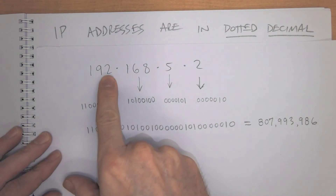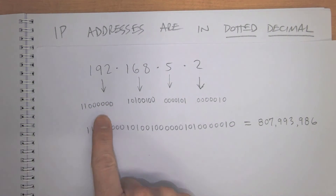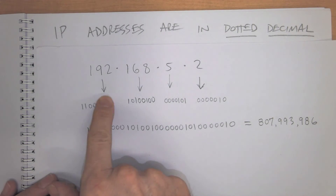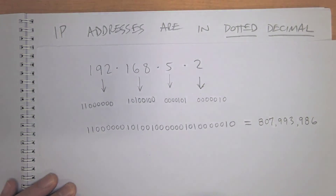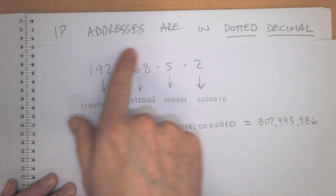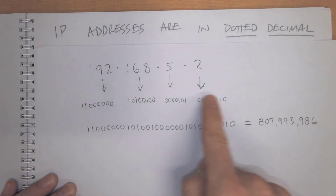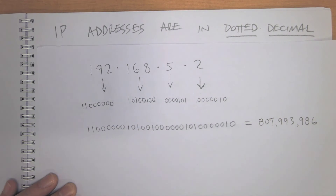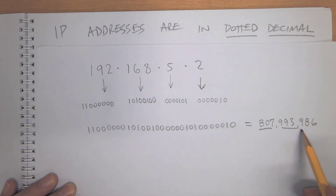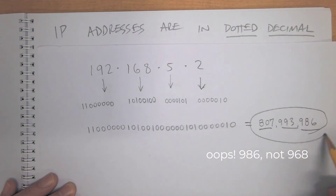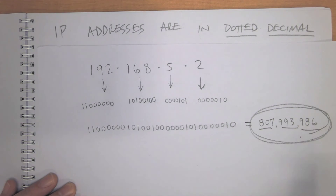Let's look at what an IP address looks like in binary. If you convert 192 to binary you get a specific 8-bit pattern, 168 gives another, 5 gives another, and 2 gives another. So the IP address 192.168.5.2 is represented by that 32-bit binary number. If you were to write it all together and convert that binary number into a decimal number, you would get 3,232,235,778. That full number is the actual IP address, but it's too complicated for humans, so we use the dotted decimal format instead.